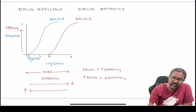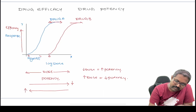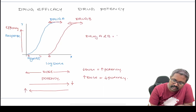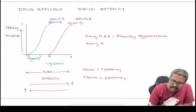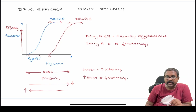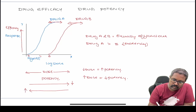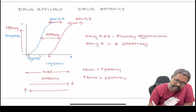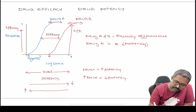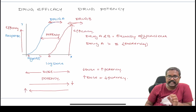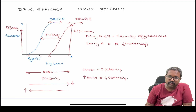The height of the curve will show you the efficacy. Drug A and drug B are equally efficacious, but in terms of potency, drug A is more potent than drug B. This gap between the curves tells you about potency, and the height tells you about efficacy.